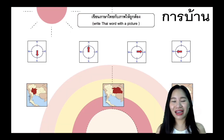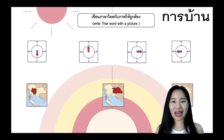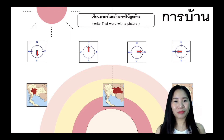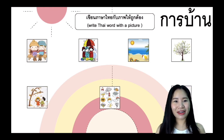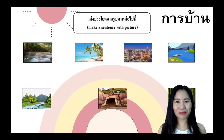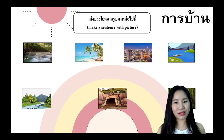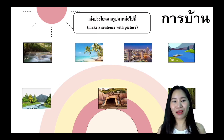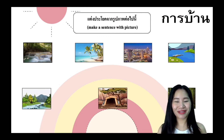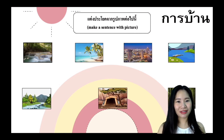Here is your homework: write the Thai word that matches each picture. There is also a homework to write Thai words about the seasons. The last task is to make sentences from the pictures — for example, the first picture shows a waterfall. In Thai, waterfall is 'nam tok,' so make a sentence about that picture. Don't forget to submit your homework. That's all for today — see you in the next part!